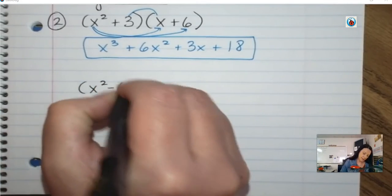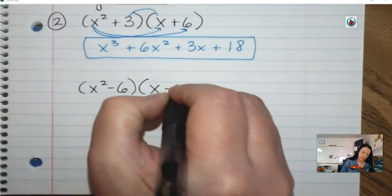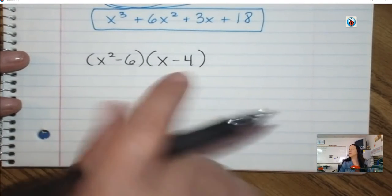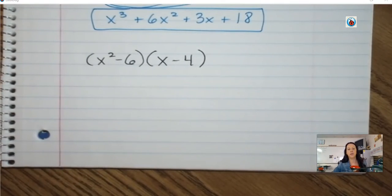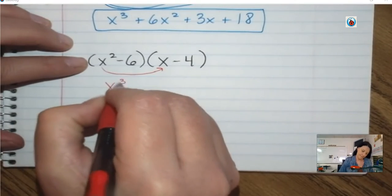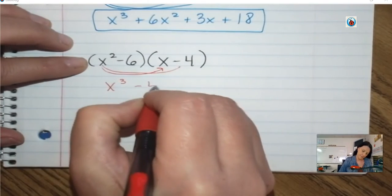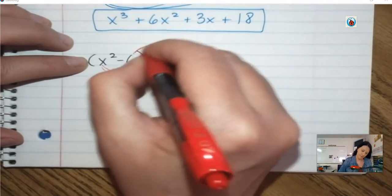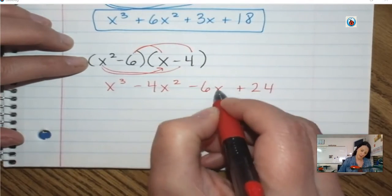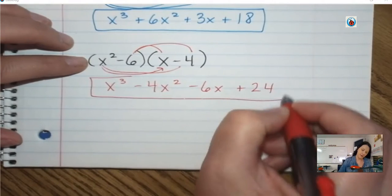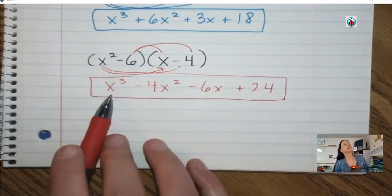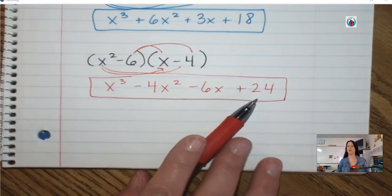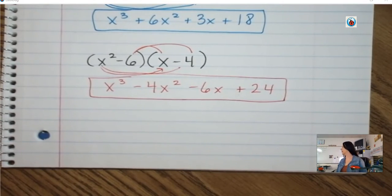Here's another one to work on — this one is not in the notes, so you'll just have to write it down: x squared minus 6 times x minus 4. Be careful — you have a minus and you have another minus, so make sure to pay attention to your symbols. Final answer: x cubed minus 4x squared minus 6x plus 24.